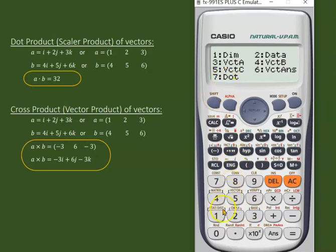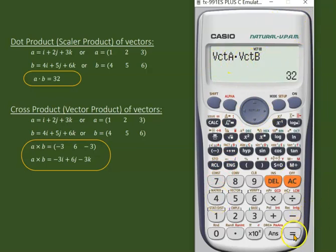Then go again to the vector, and here is dot, this dot product or scalar product which comes under option seven. Then we need to add vector b, which comes under option four. Here we go. Now enter. So the value is 32. The dot product or scalar product of vector a and b is 32.